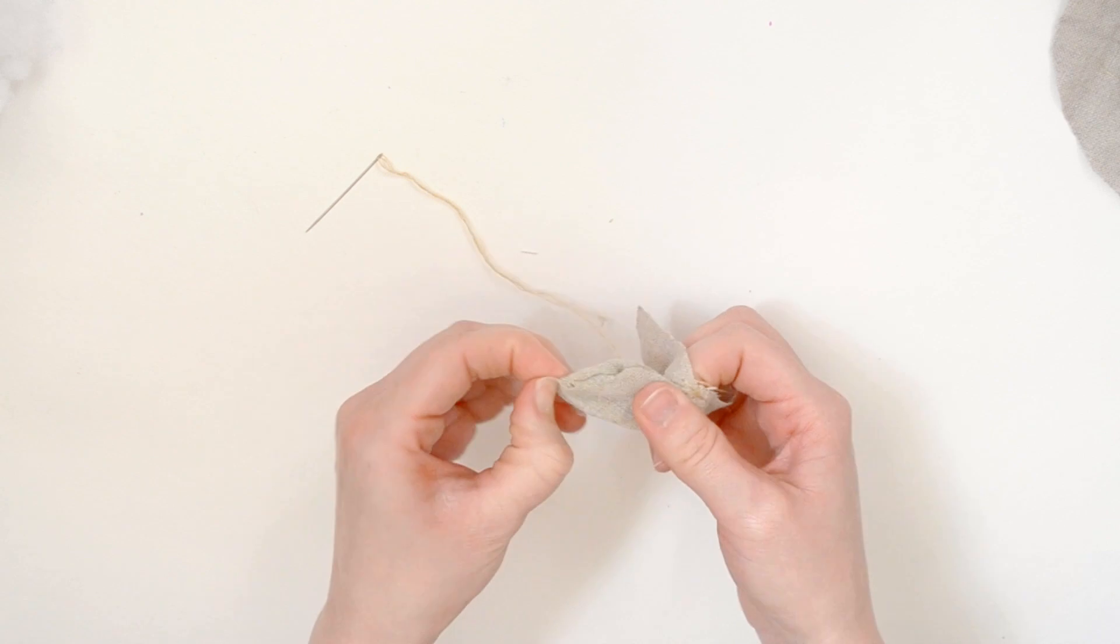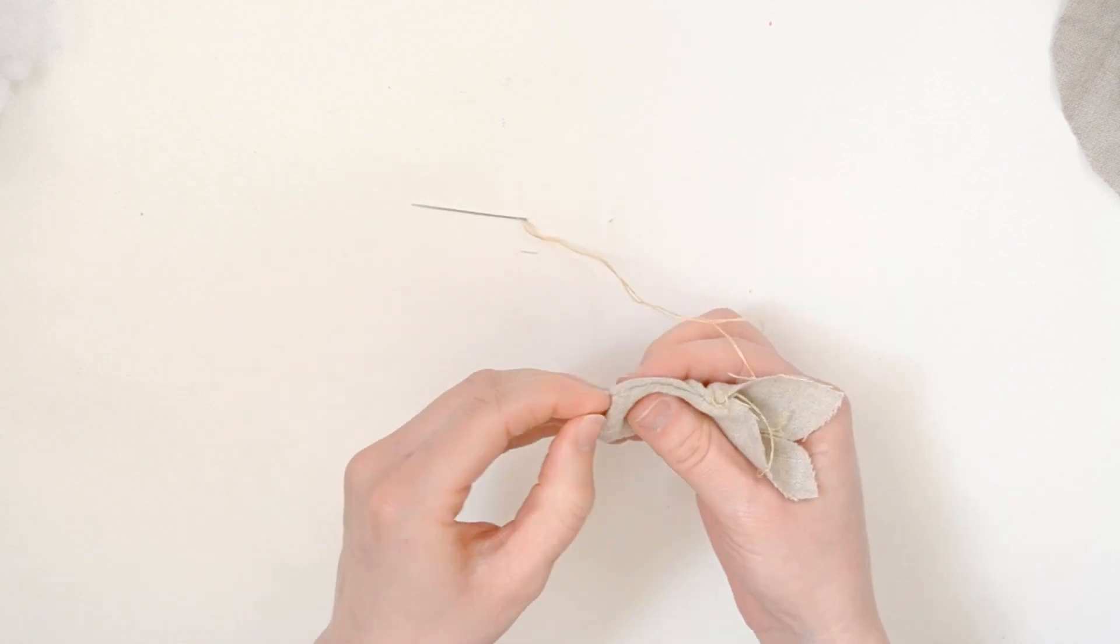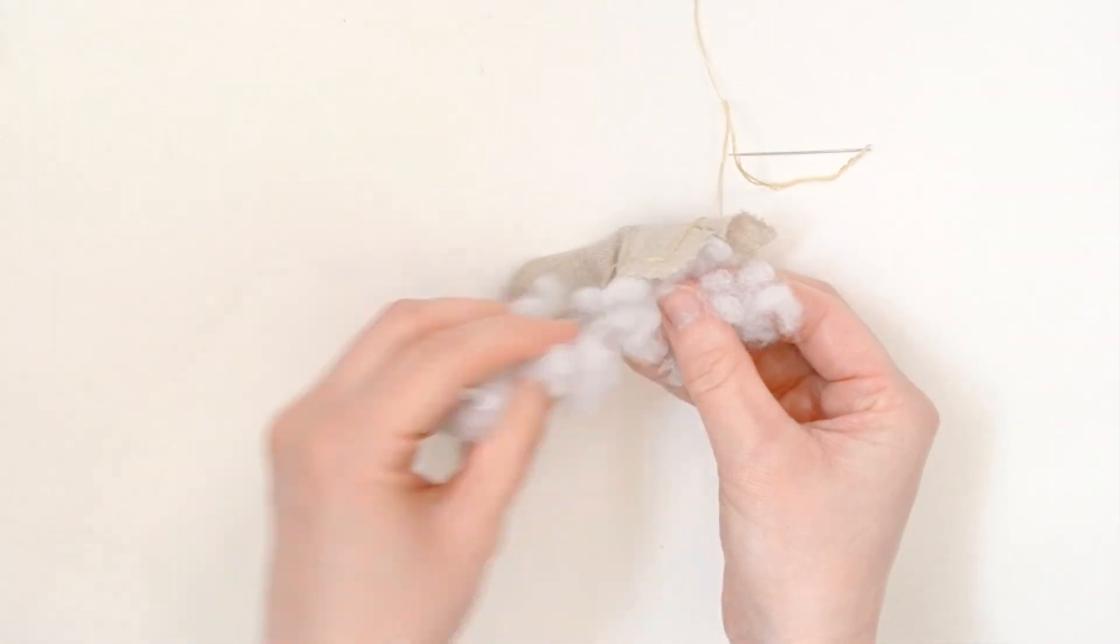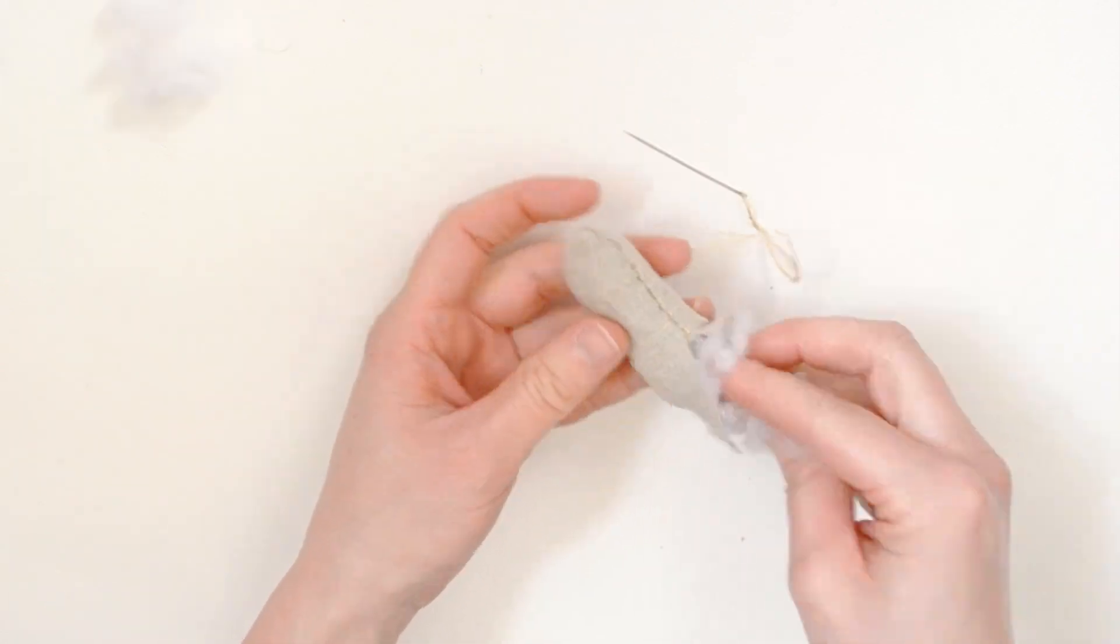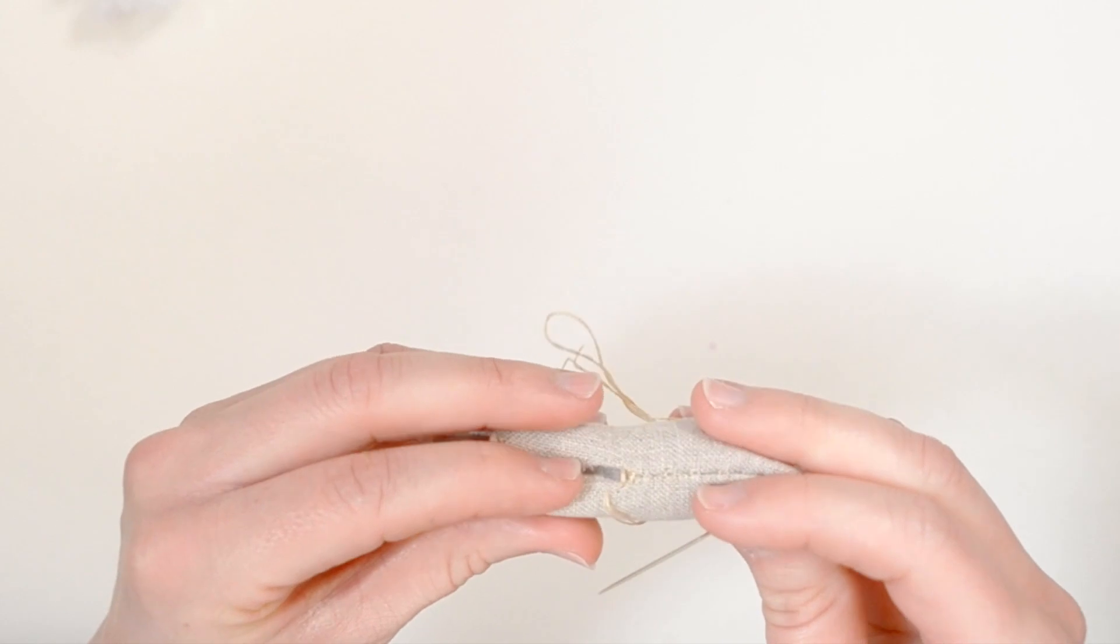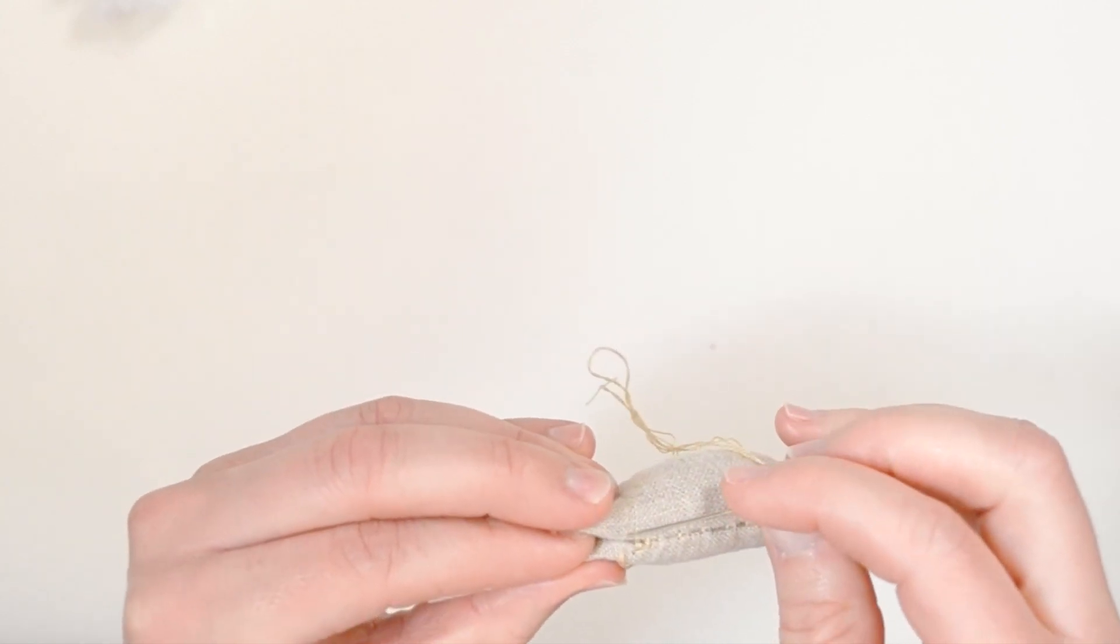Turn your piece and begin to stuff. Once it's partially stuffed, turn your seams in and use a ladder stitch or a whip stitch to sew the rest of the way up the stem. I feel like because this mushroom has a slightly rustic feel, it won't matter if you see the stitches.